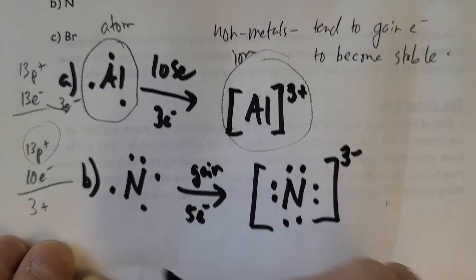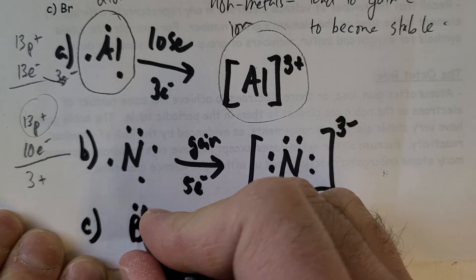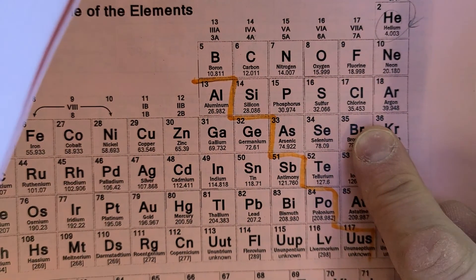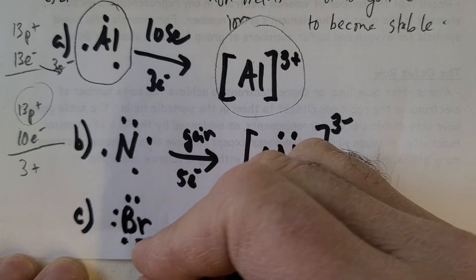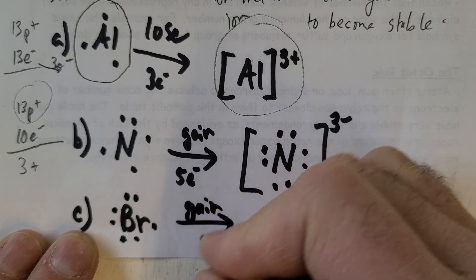Bromine, of course, is Group 7, so it has seven electrons. So everything's full except for one. Of course, it's a non-metal, you know it's going to gain one electron.